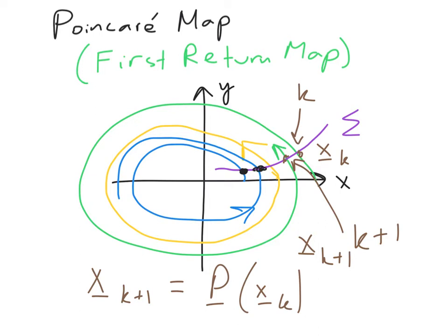And if we start right on the limit cycle that we've drawn, the Poincaré map will map this particular point right back to the limit cycle. So it's a map from sigma to sigma, and it's telling us what happens to points basically after one rotation through our flow.